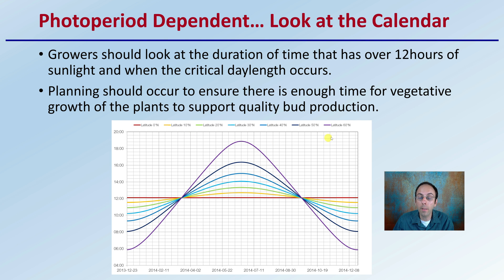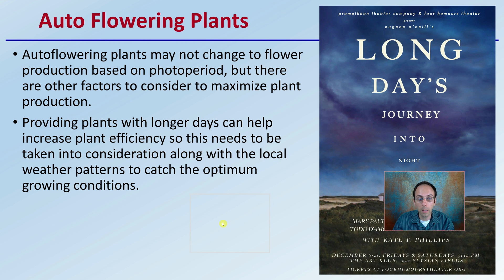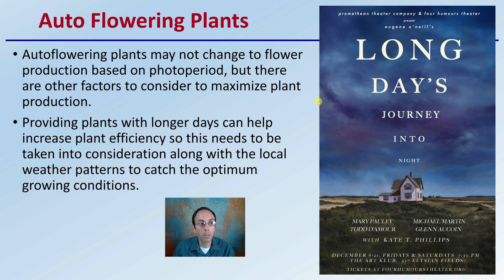A lot of this depends on your degree of latitude. You don't want to be planting too late in the season and only allowing plants to go through the veg phase for a very short period of time. Look at the calendar and determine when your planting date should be. Autoflowering plants may not change to flower production based on the photoperiod, but there are other factors to consider to maximize plant production. Providing plants with longer days can help increase plant efficiency, and this needs to be taken into consideration along with local weather patterns to catch the optimum growing conditions.